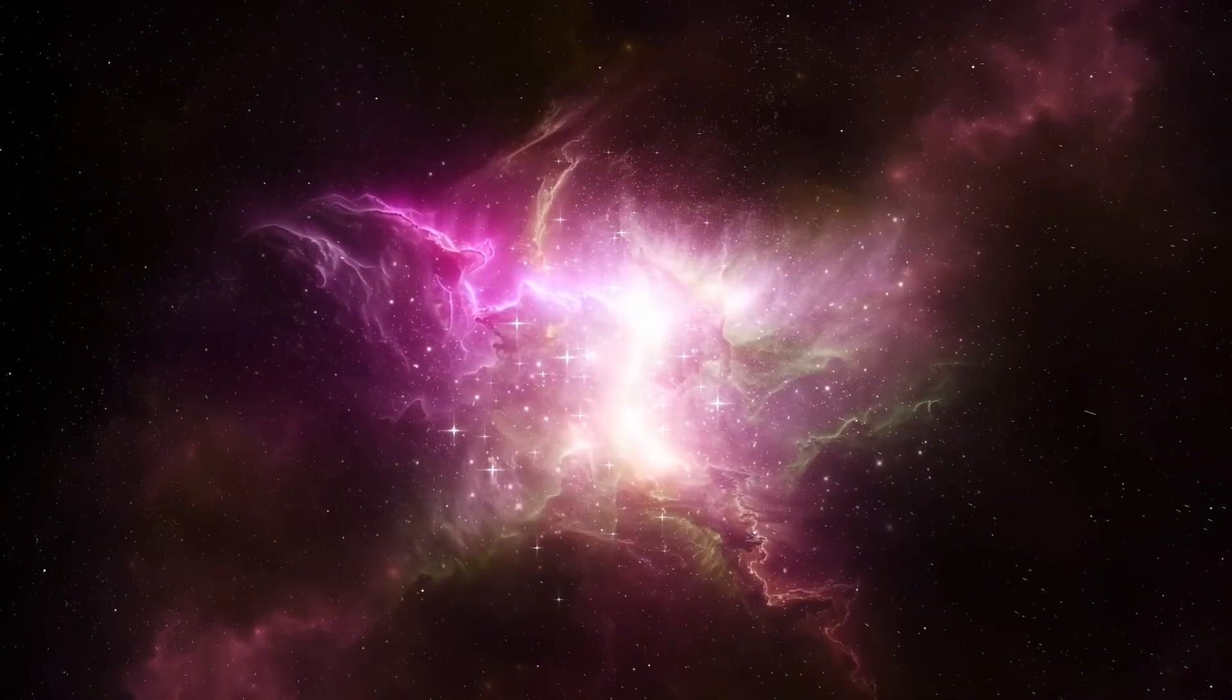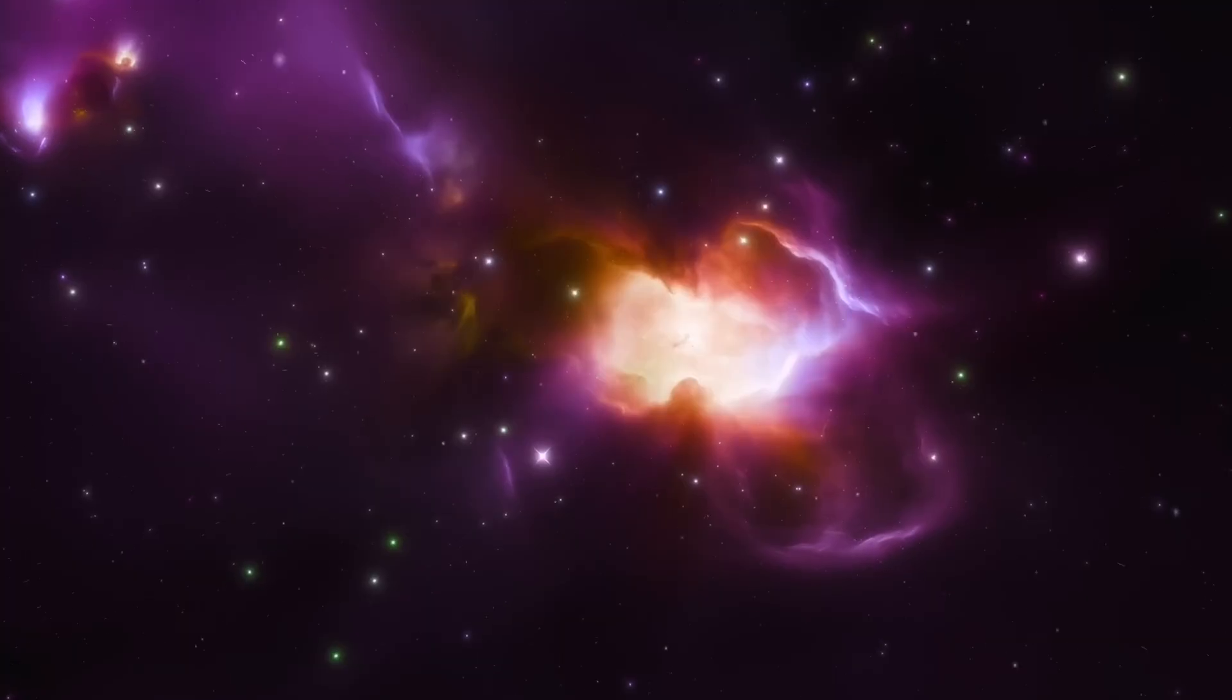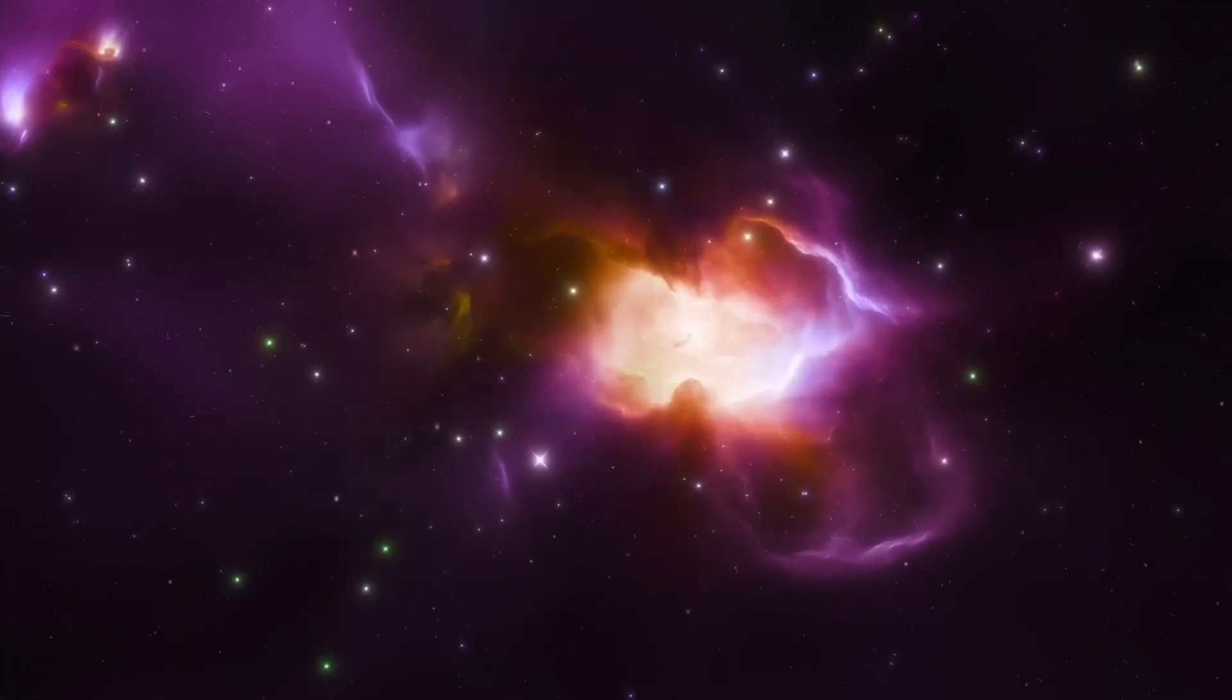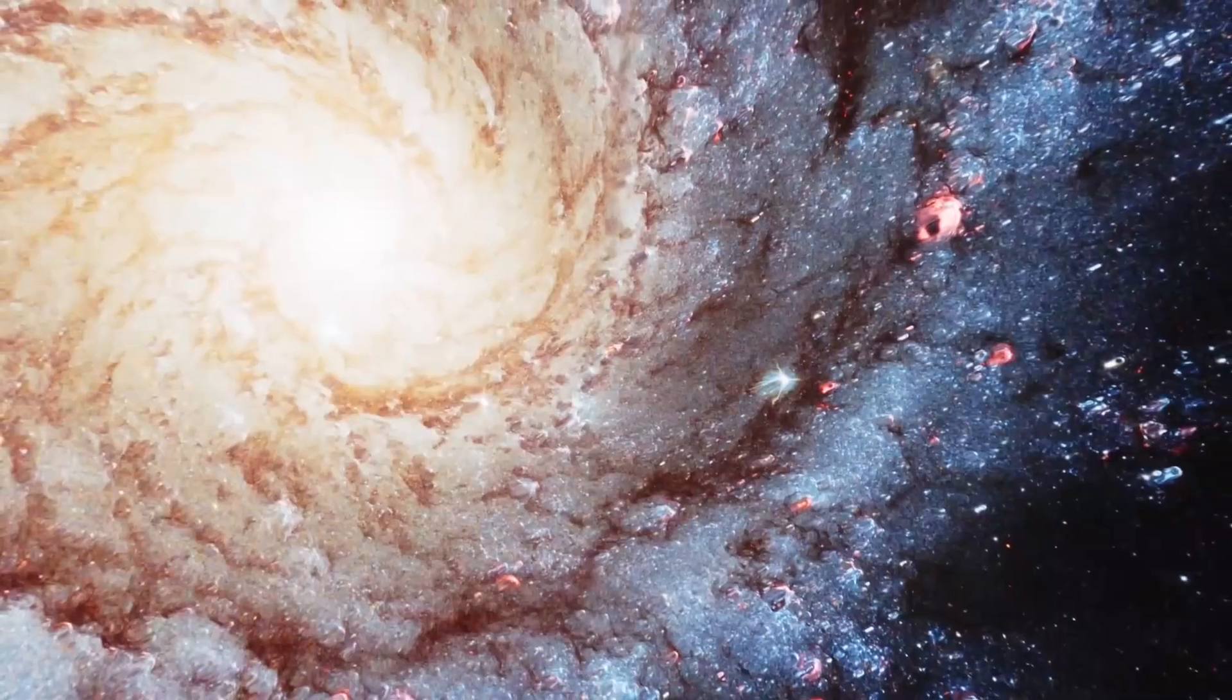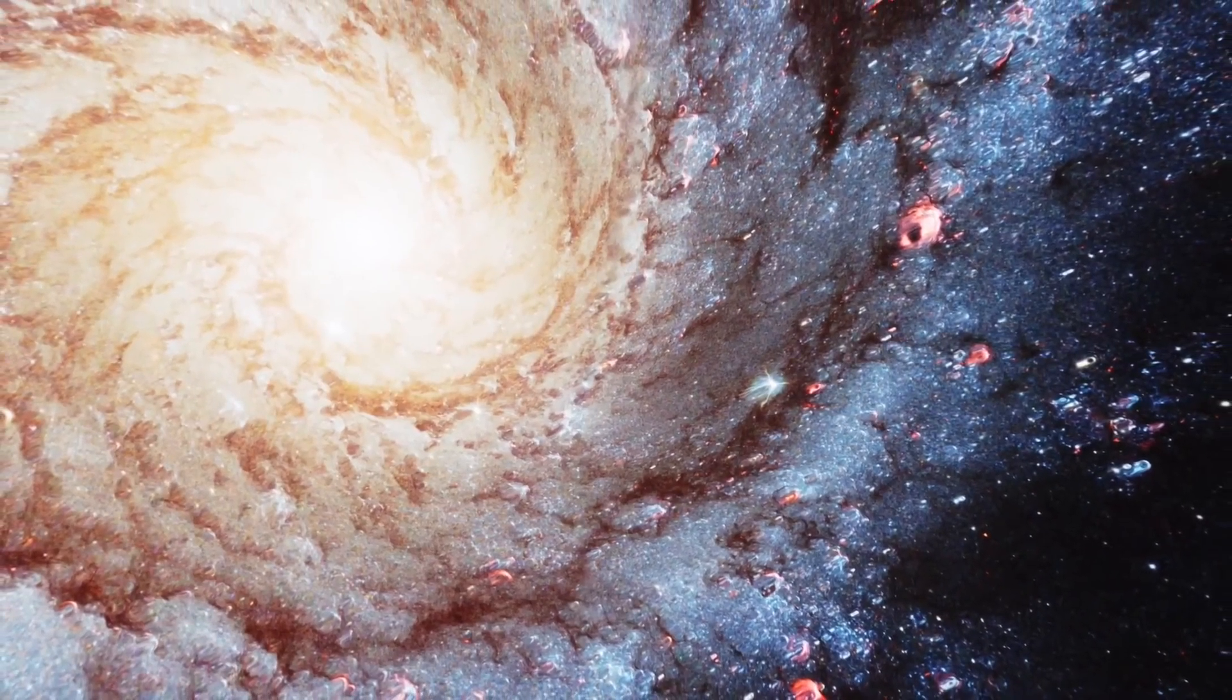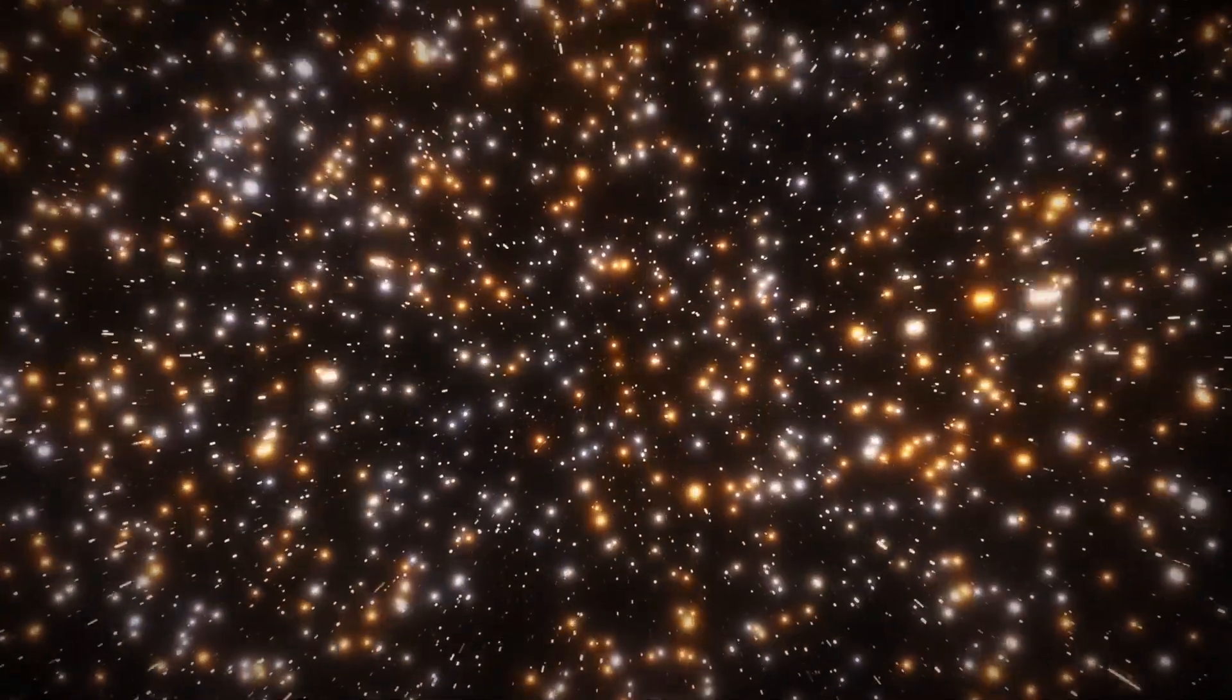According to our models, galaxies need billions of years to form. Stars are supposed to slowly cluster together, gradually sculpted by gravity until a galaxy emerges. But MZ-14 is fully assembled, luminous, and structured far too soon. How is this even possible?